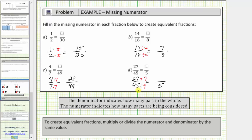Forty-five divided by nine equals five, and twenty-seven divided by nine equals three. So twenty-seven forty-fifths is equivalent to three-fifths. I hope you found this helpful.